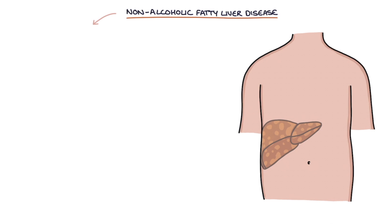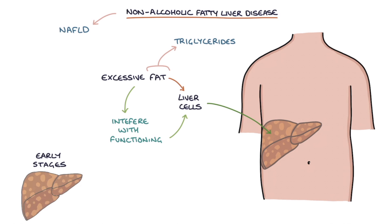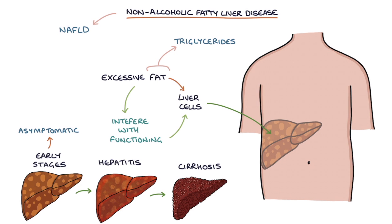Non-alcoholic fatty liver disease, abbreviated to NAFLD, is characterized by excessive fat in the liver cells, specifically triglycerides. These fat deposits interfere with the functioning of liver cells. The early stages can be asymptomatic; however, it can progress to hepatitis and liver cirrhosis. Around 25% of adults are estimated to have NAFLD, so it's very common.